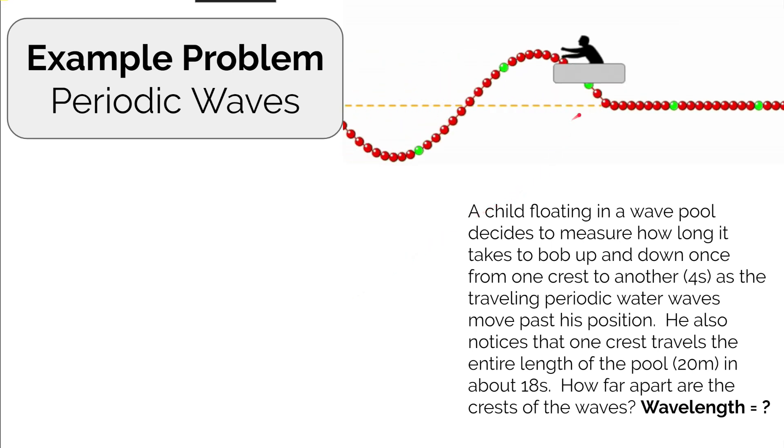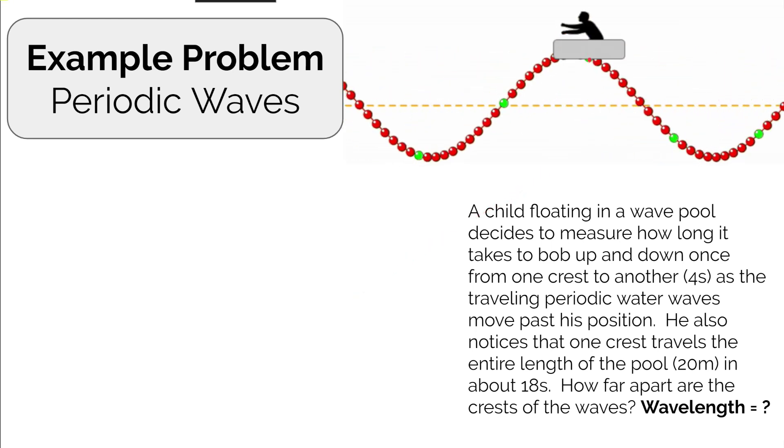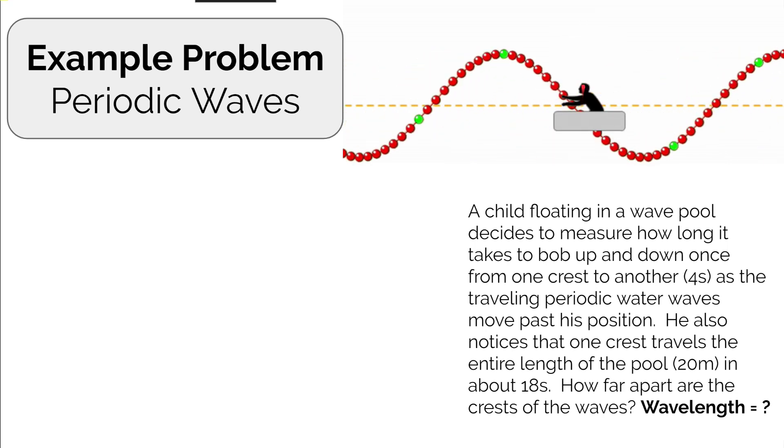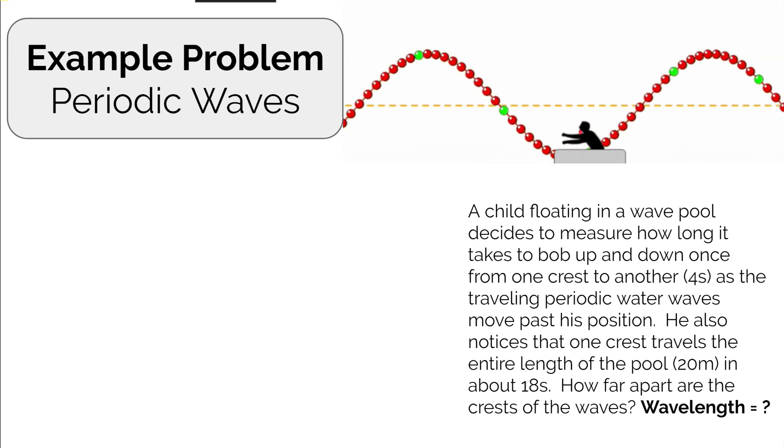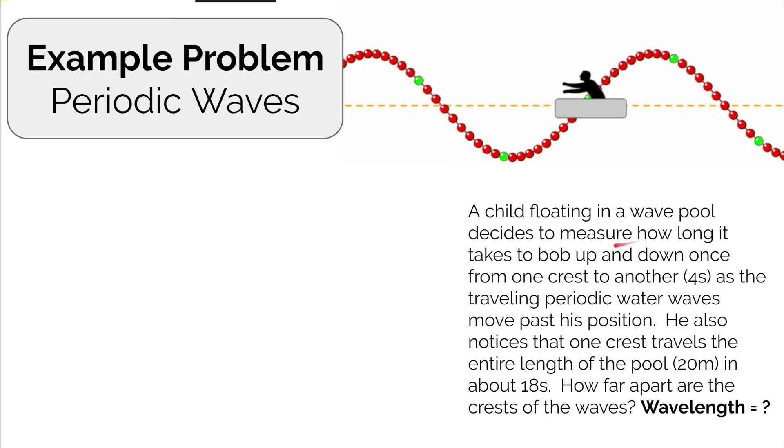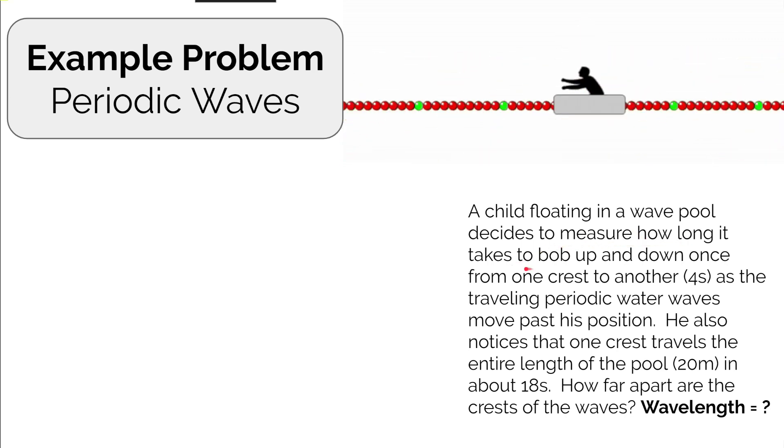Let's say we've got a child floating in a wave pool, moving up and down as the periodic water waves move from left to right. They decide to measure how long it takes to bob up and down once, from one crest to another crest.